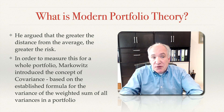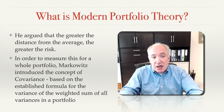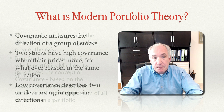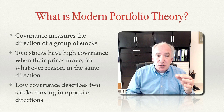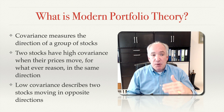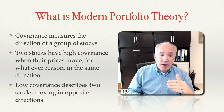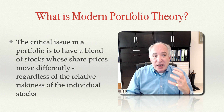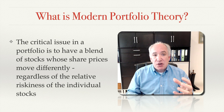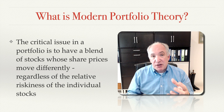In order to measure this for a whole portfolio of stocks, Markowitz introduced the concept of covariance, based on the established formula for the variance of the weighted sum of all variances in a portfolio. Covariance measures the direction of a group of stocks. Two stocks have high covariance when their prices move in the same direction, and low covariance when their stock prices move in opposite directions. The critical issue in a portfolio is to have a blend of stocks whose share prices move differently, regardless of the relative riskiness of the individual stocks.